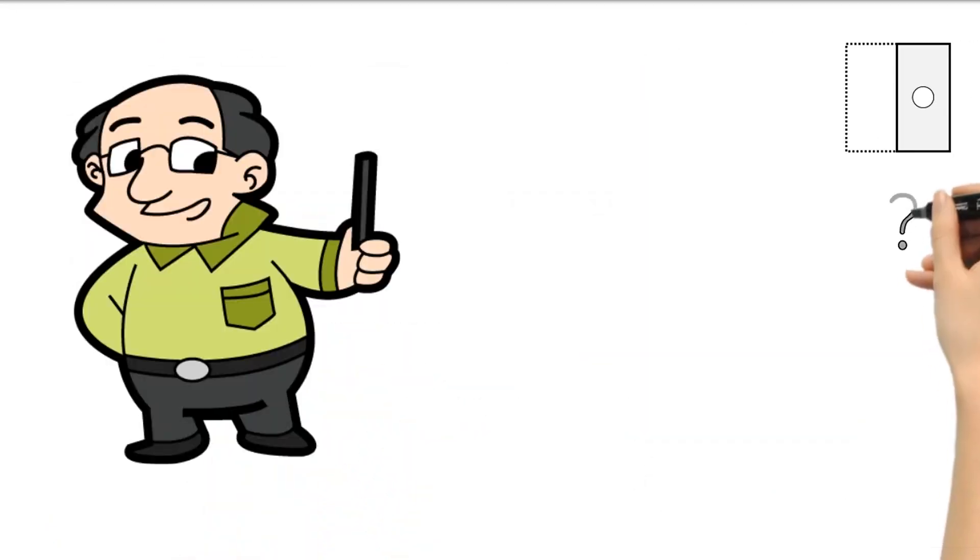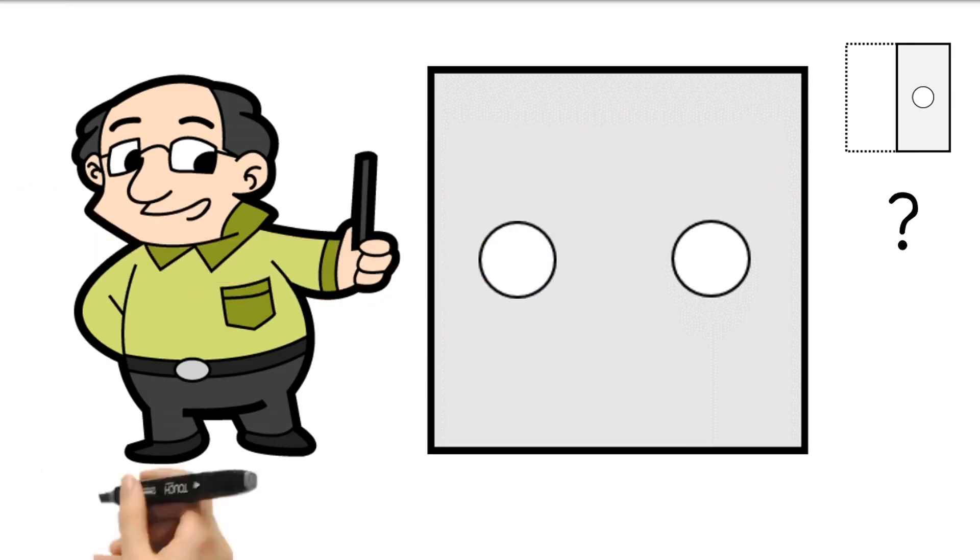When the paper is unfolded, the holes will mirror on the left and right sides of the sheet.